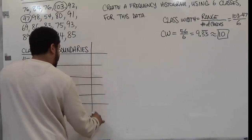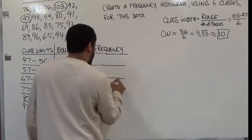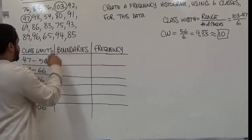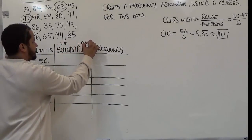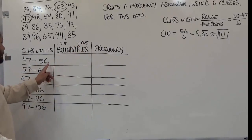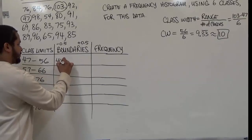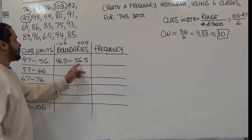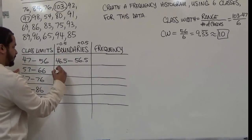There's a real easy method for getting boundaries. We add half the value and subtract half the value to the upper and lower limits. Because these are whole numbers, we add 0.5 and subtract 0.5 from either side of the limits — subtracting 0.5 from every left-hand class limit and adding 0.5 to every right-hand class limit. So forty-seven becomes forty-six point five, going up to fifty-six point five.